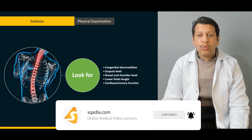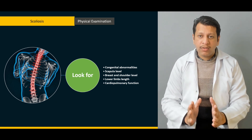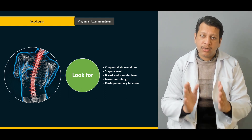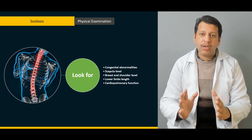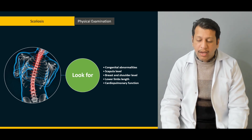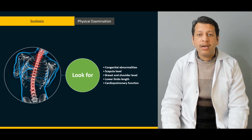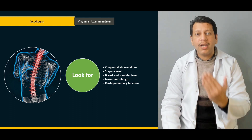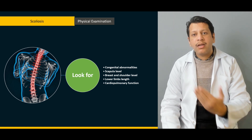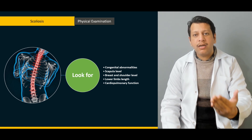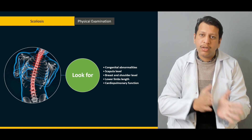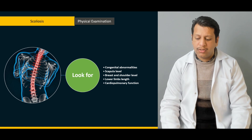Once we have taken the history and examination, we classify the type of scoliosis our patient has — whether it's early onset or late onset, whether it's juvenile or congenital or adolescent idiopathic, whether it's postural or whether it's structural.